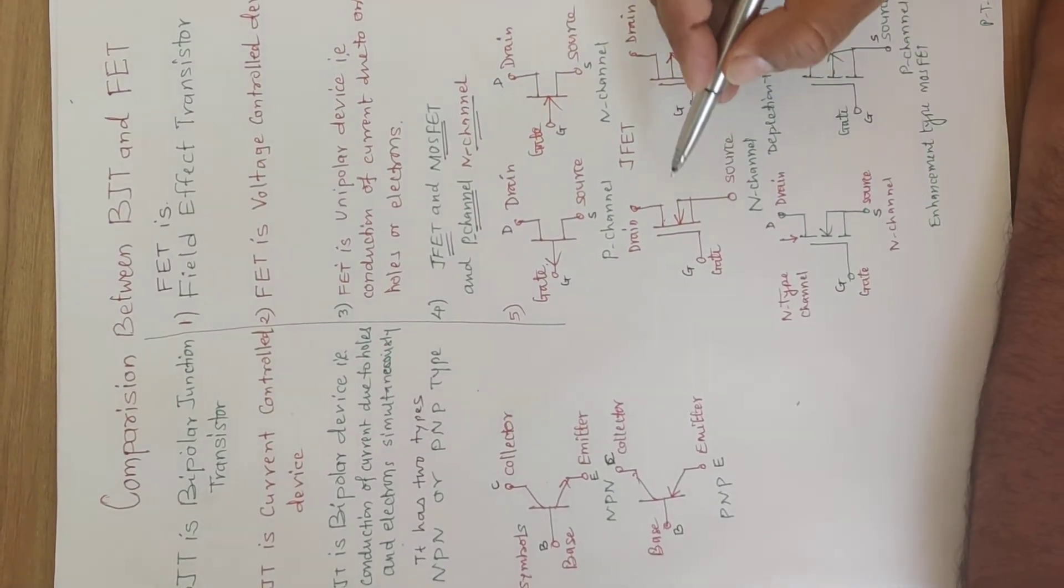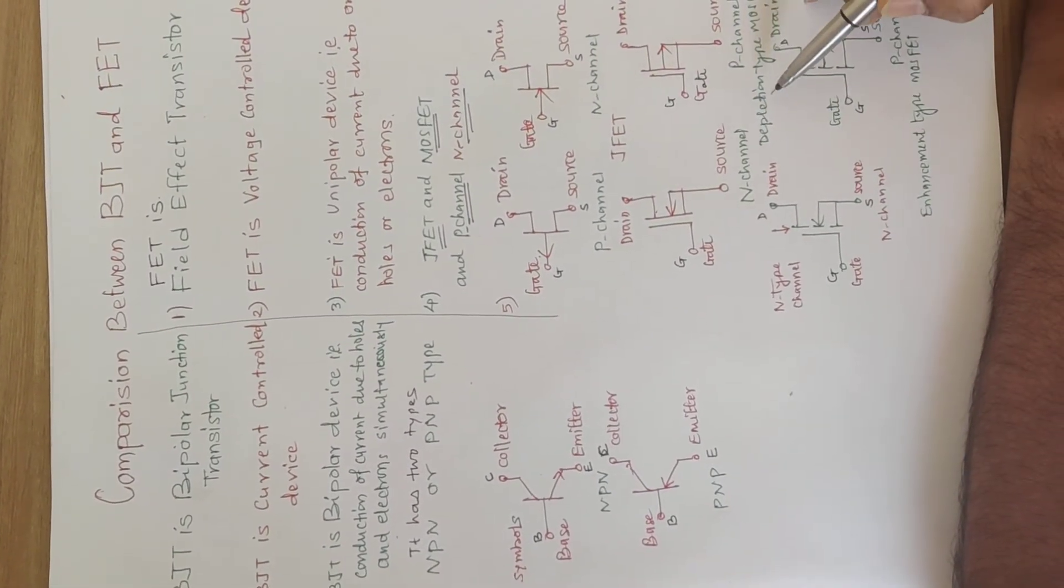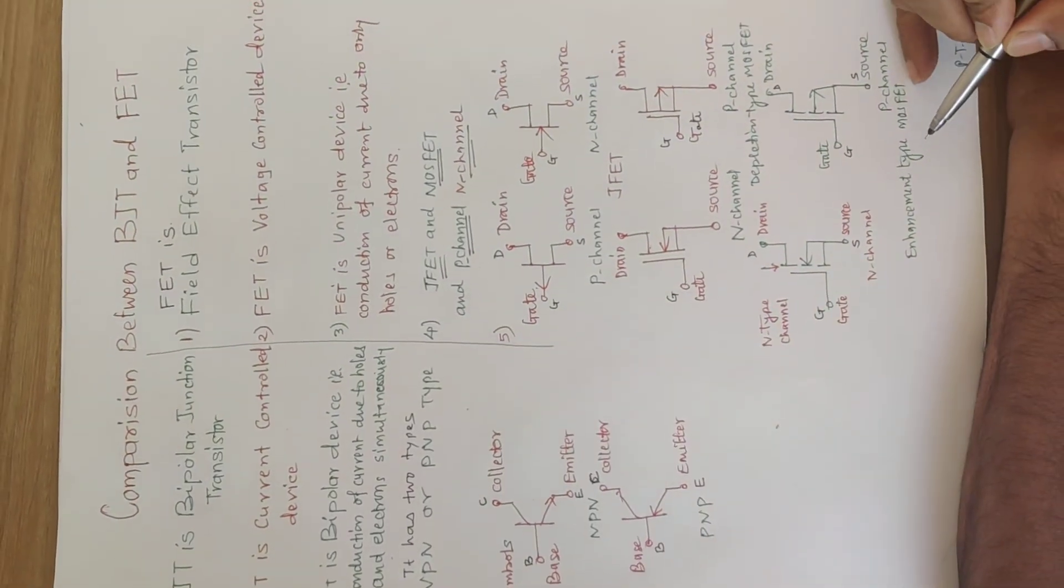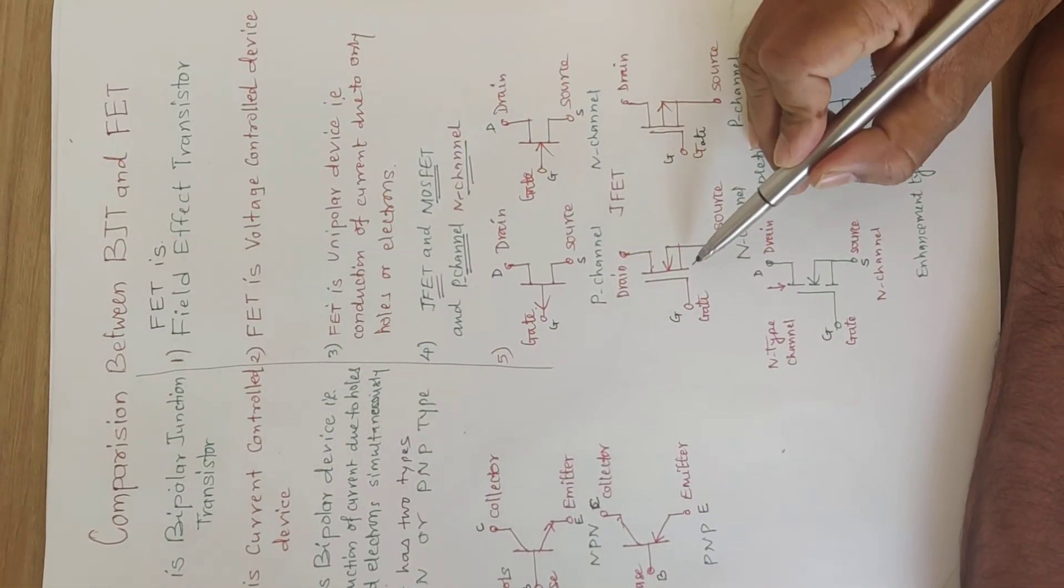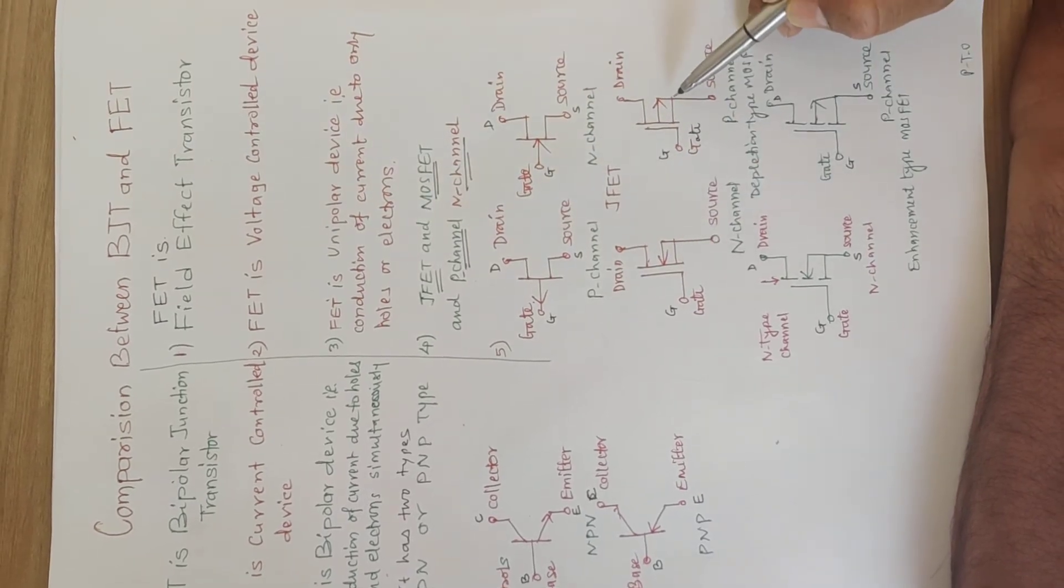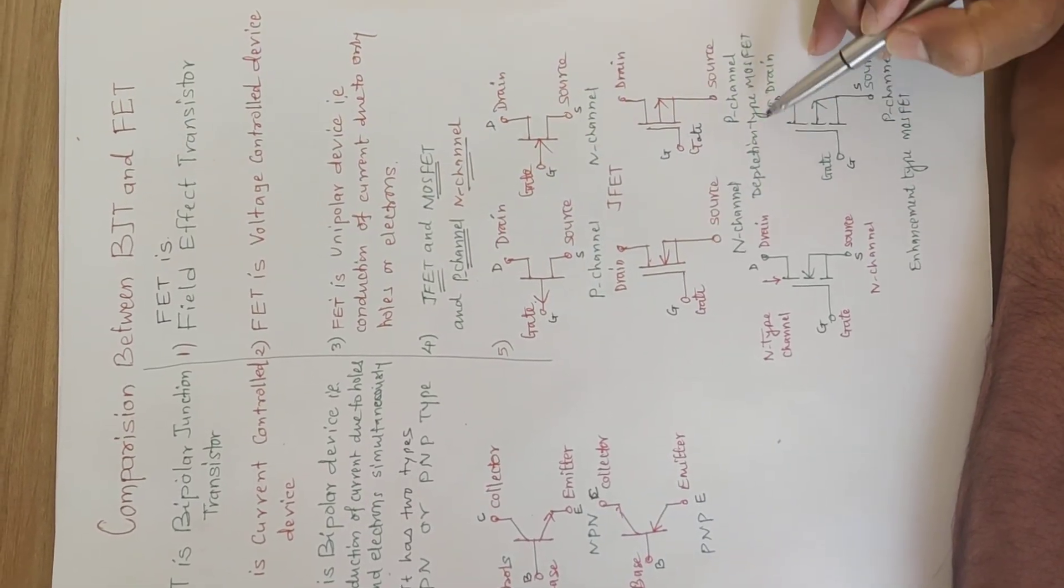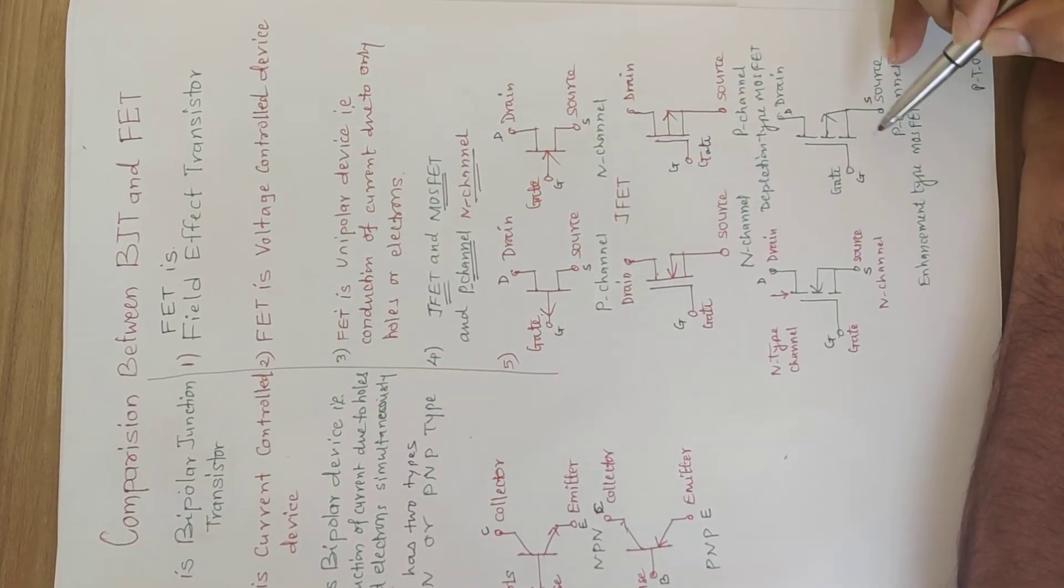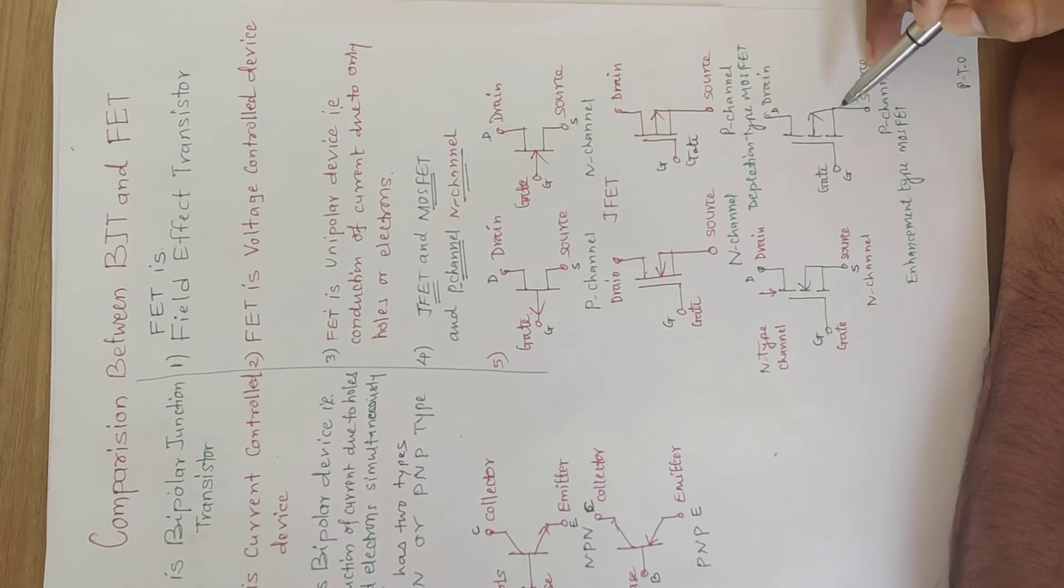Now, there are two types of MOSFETs also. Depletion type MOSFET and enhancement type MOSFET. These are the symbols of JFET and MOSFETs of depletion type. These two are for enhancement type MOSFETs.